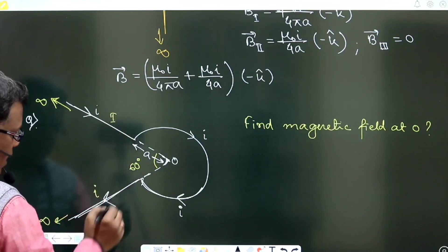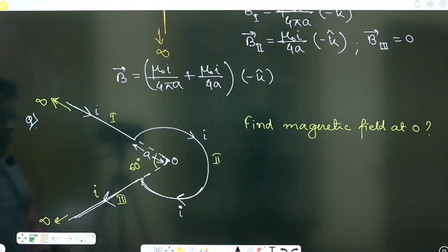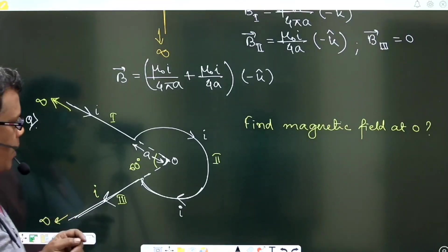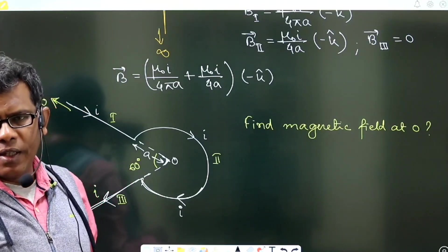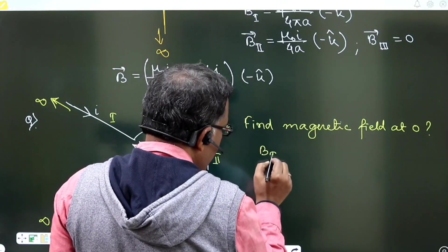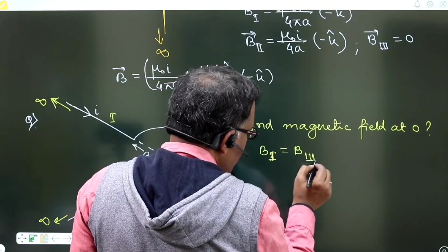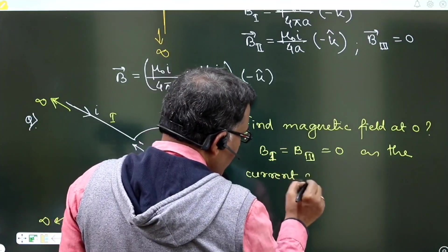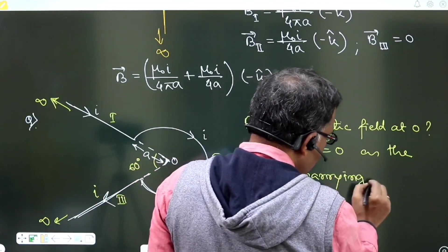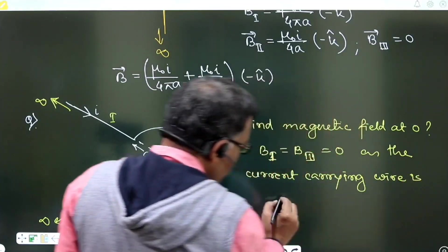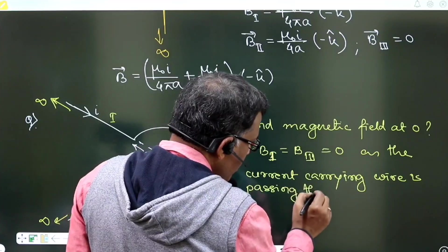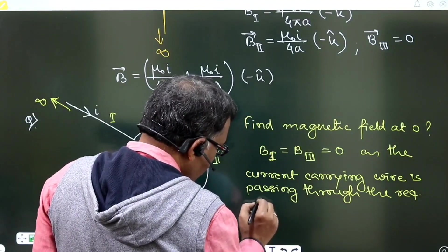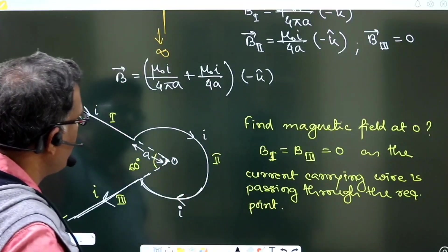For section 1 and section 3, the locus shown by the dotted line — the line of section 1 and section 2 — is passing through the required point where we need to know the magnetic field. So the magnetic field due to section 1 as well as section 3 will both be zero, because a current-carrying wire passing through the required point produces no magnetic field at that point.